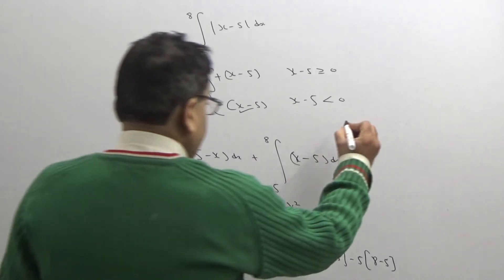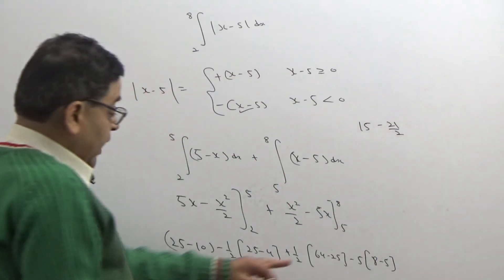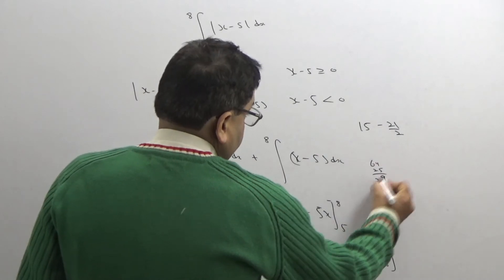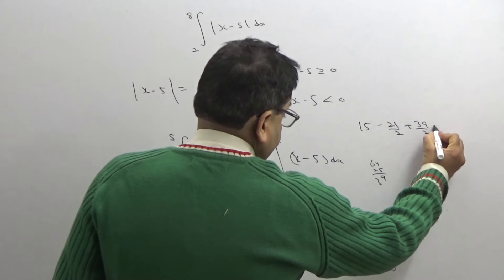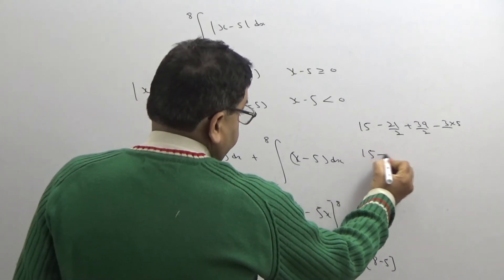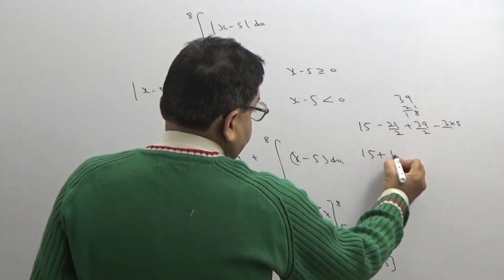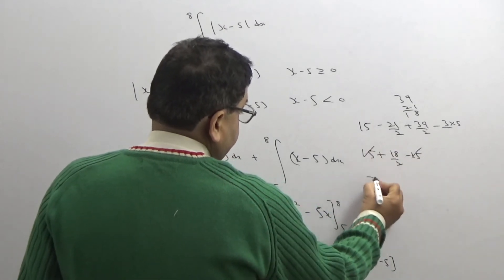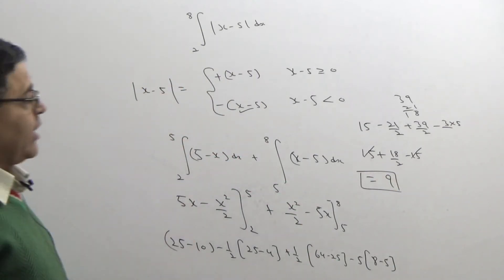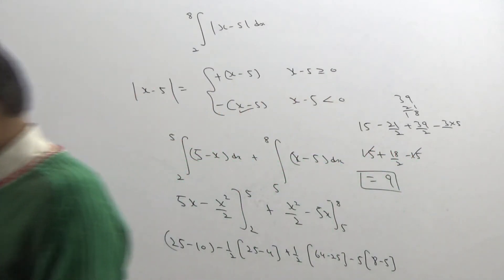So we compute: 25 − 25 gives 0, then we get 25 minus 4 which is 21/2. After that 64 minus 25 gives 39/2, then minus 3 into 5. We get 15 plus 39/2 minus 21/2, which gives 18/2 minus 15, and 15 cancels — the answer is 9. The answer to this question is 9. Now we will proceed by our graphical or analytical method to see if this question can be solved within a fraction of a second.